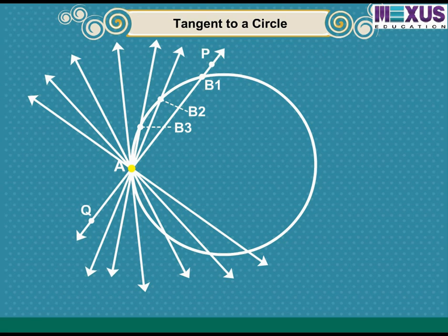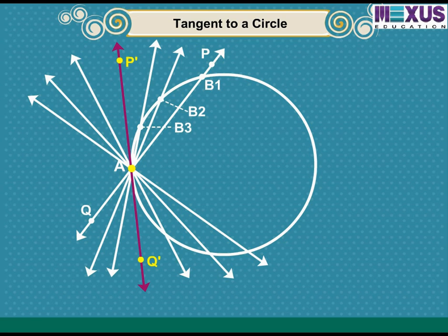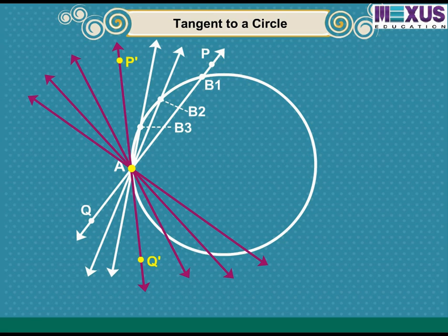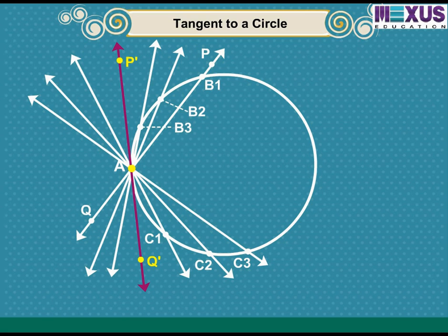But at one position, you will notice that it intersects the circle at point A only — see the position P-Q' of PQ. This shows that a tangent exists at point A of the circle. If we turn line PQ further, in all other positions it will intersect the circle at A and at another point, say C1, C2, C3, etc. So you can observe that there is only one tangent at a point of the circle.